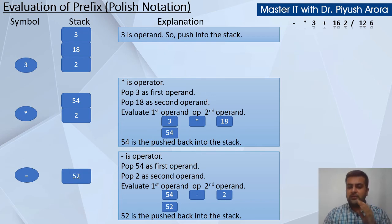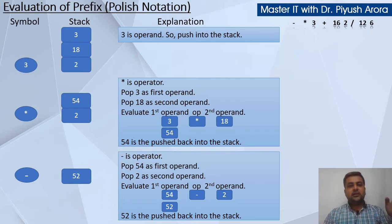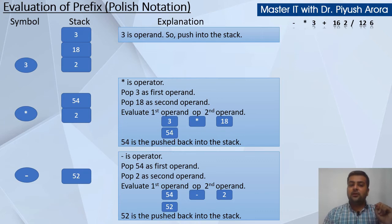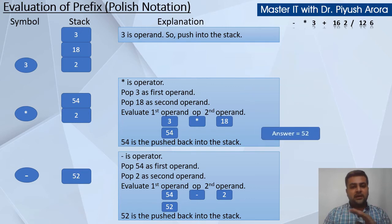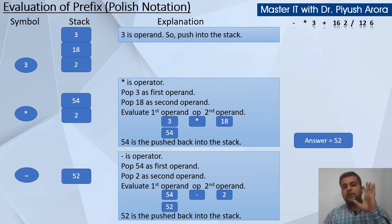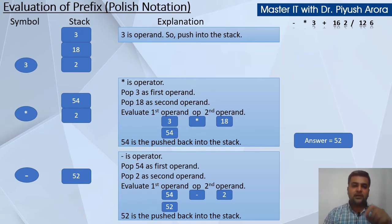Now please note — aapne right side se expression ko scan kiya, aapka last symbol minus aaya, yani ki first symbol jo expression ka pehla symbol hai, right side se scan karte hue last mein aaya. Uske aage koi bhi symbol nahi hai, so this is the last symbol. So when we reach the initial location of the expression, aapko yahan par apna kaar terminate kar dena hai. Finally jo aapke stack ke andar tha — 52 — use pop karke display karwa dijiye. So your answer is 52, hum yahan par complete ho gaye.